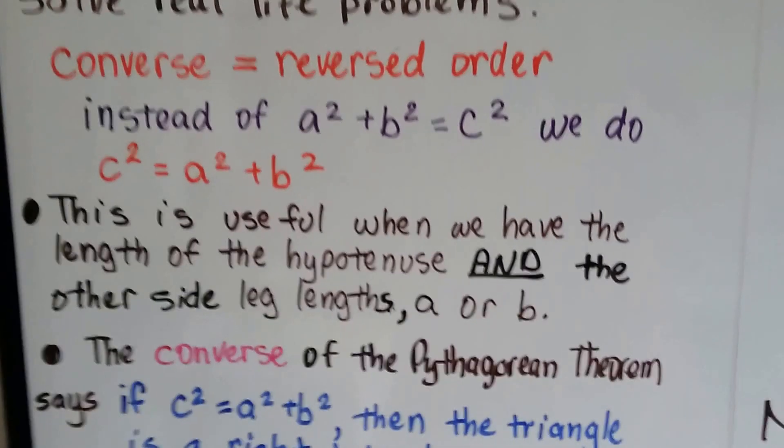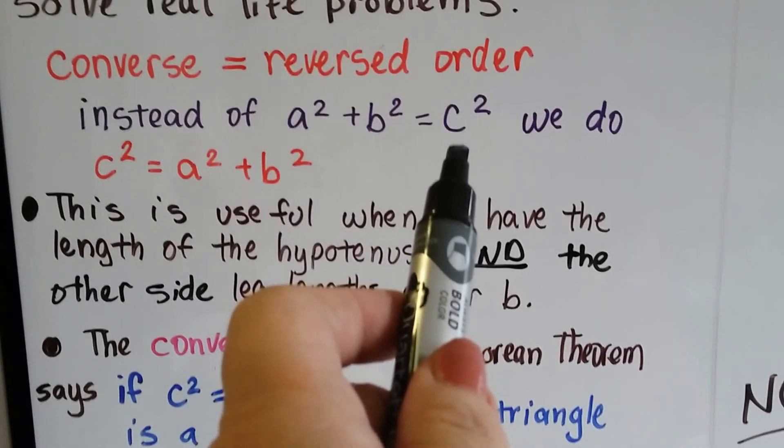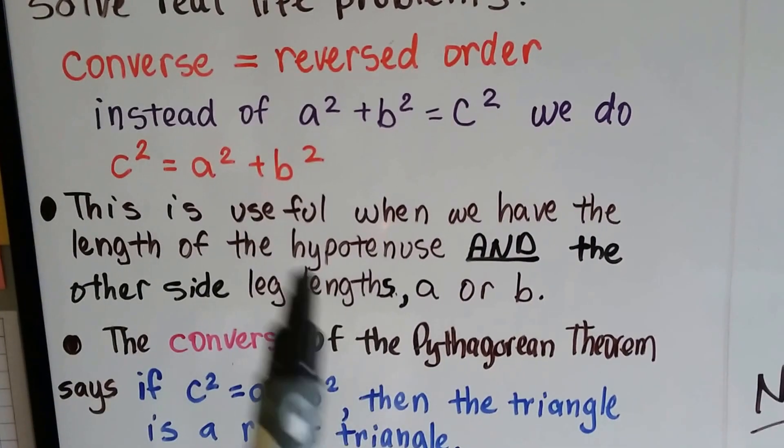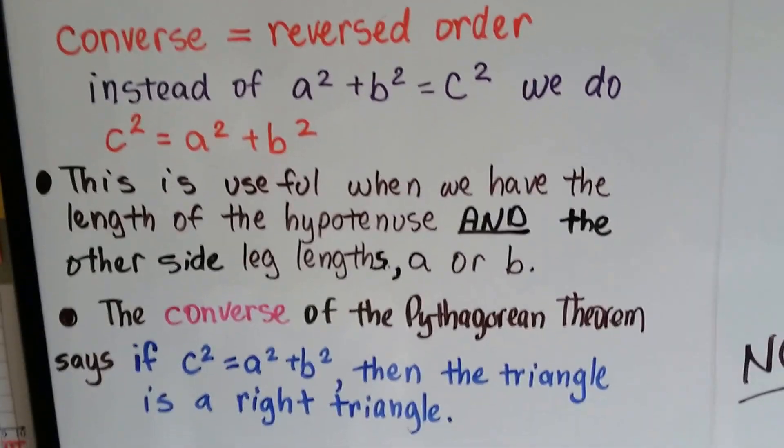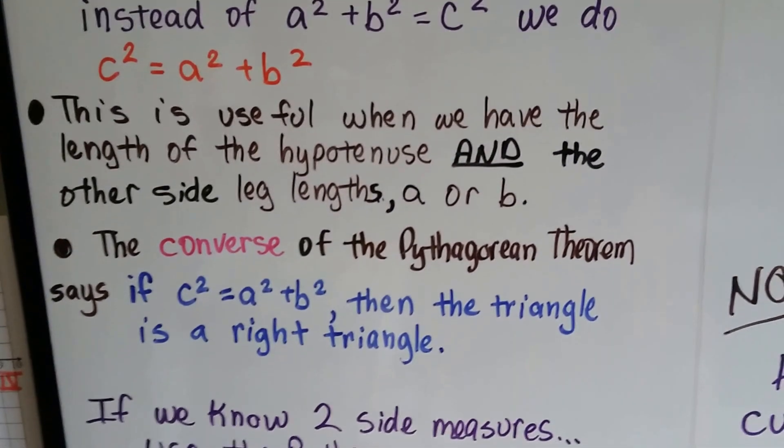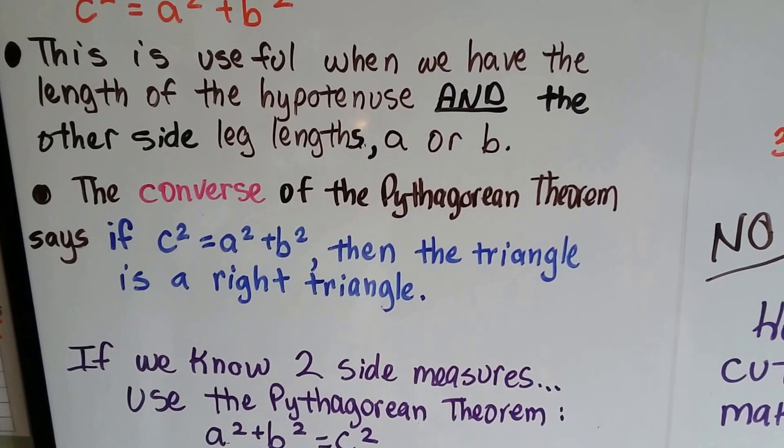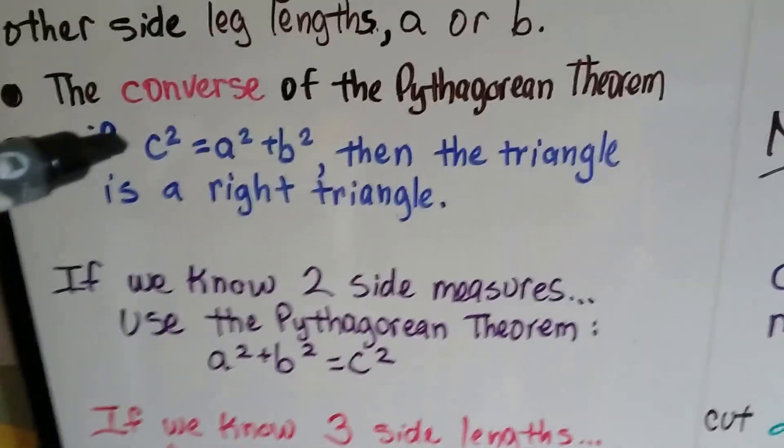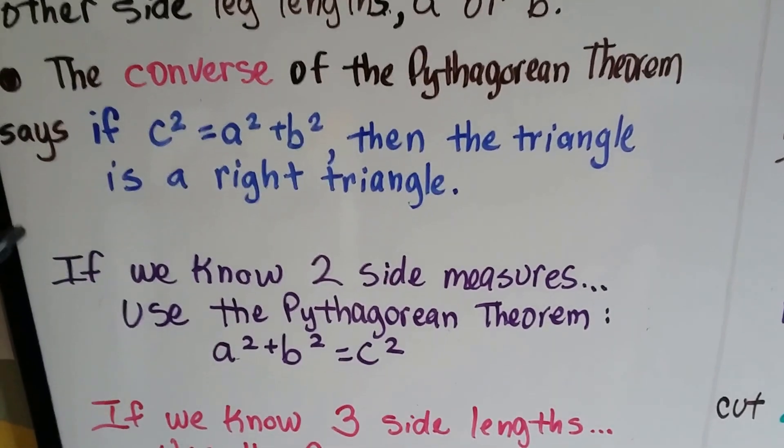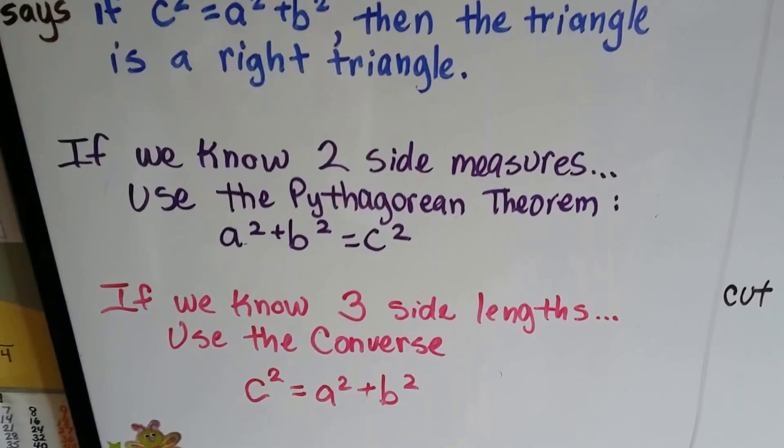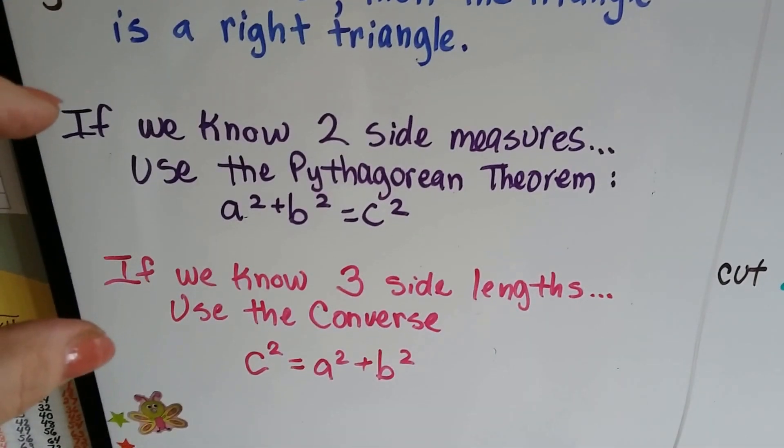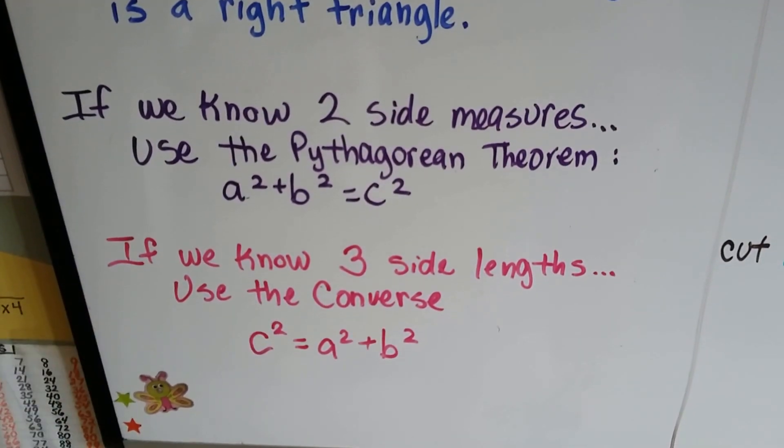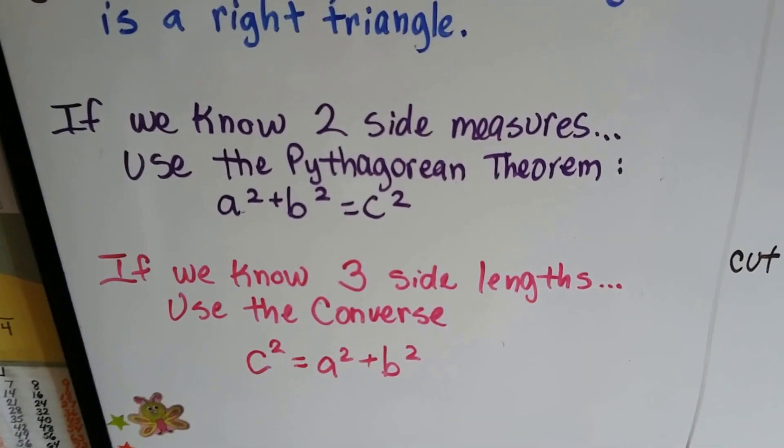Converse means reversed order, so the Pythagorean theorem starts with c squared equals a squared plus b squared. The converse is useful when we have the length of the hypotenuse and the other two side lengths. It says if c squared equals a squared plus b squared, then the triangle is a right triangle. Remember, if you have two side measures use the Pythagorean theorem, and if you have three side measures use the converse.